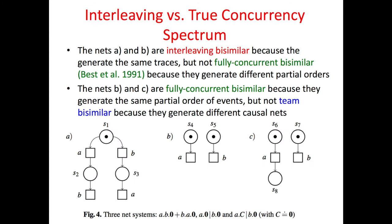To illustrate the interleaving–true concurrency spectrum, consider the three nets in this picture. Nets A and B are interleaving bisimilar but not fully concurrent bisimilar, because they generate different partial orders. Nets B and C are fully concurrent bisimilar but not team bisimilar, because they generate different causal nets.